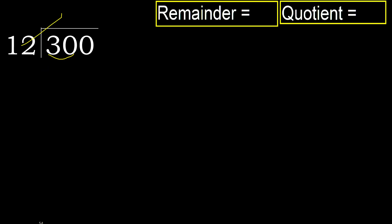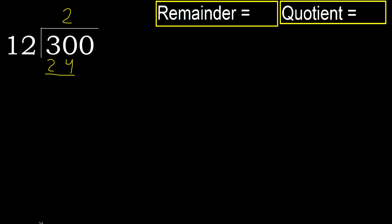12 multiplied by which number is nearest to 30 but not greater? 12 multiplied by 3 is 36, which is greater. Multiplied by 2, 24 is not greater, okay. Subtract: 30 minus 24 equals 6.